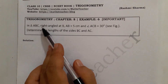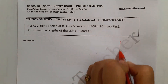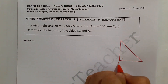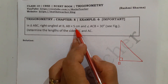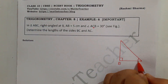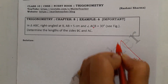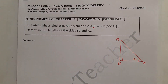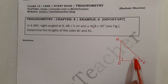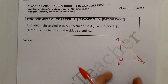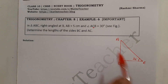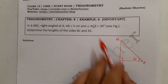Example 6: In triangle ABC, right-angled at B. Let's draw a triangle first. The right angle is at point B, so we make a 90-degree angle there. AB is equal to 5 cm, and angle ACB is 30 degrees. We label the vertices C and A, and identify the base for our trigonometric ratio.